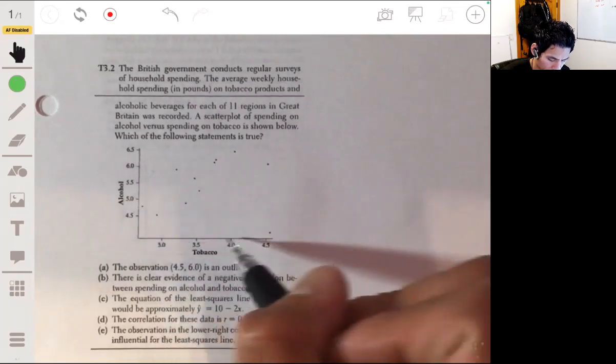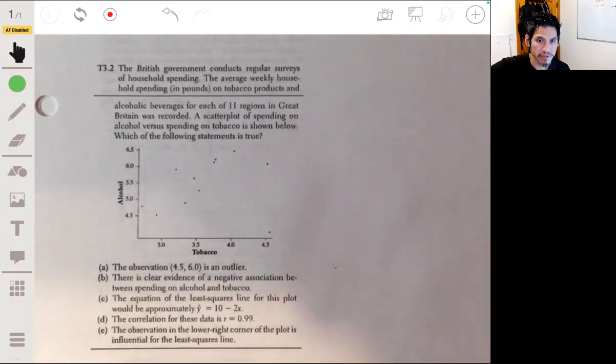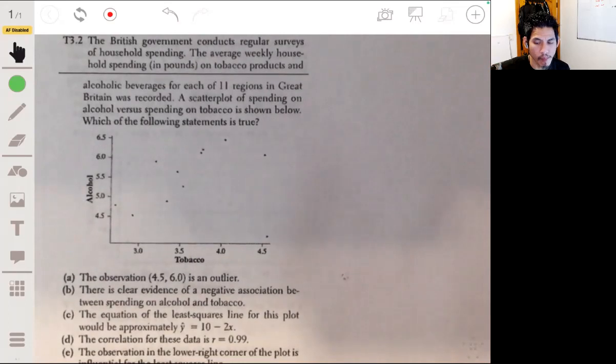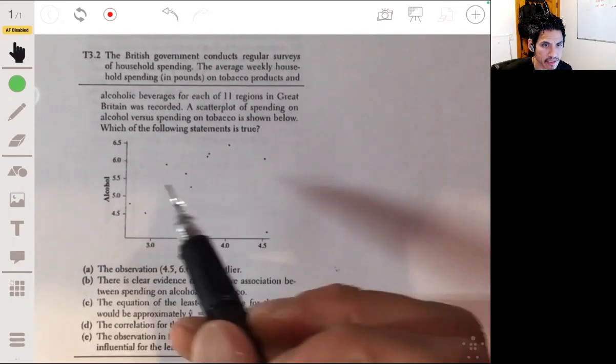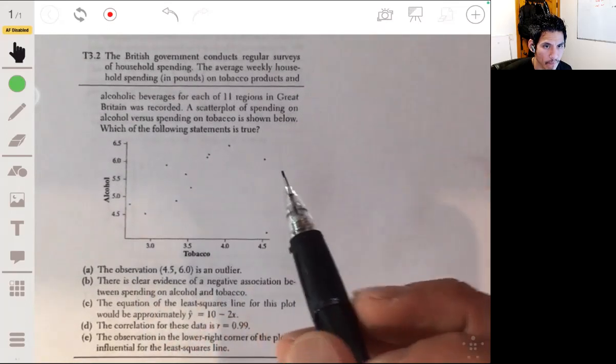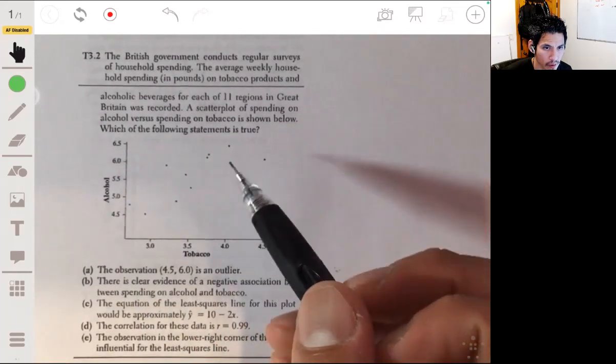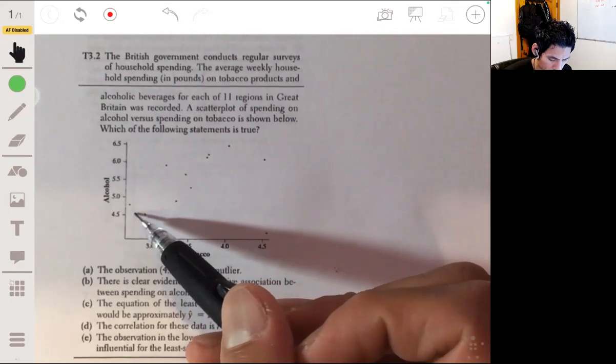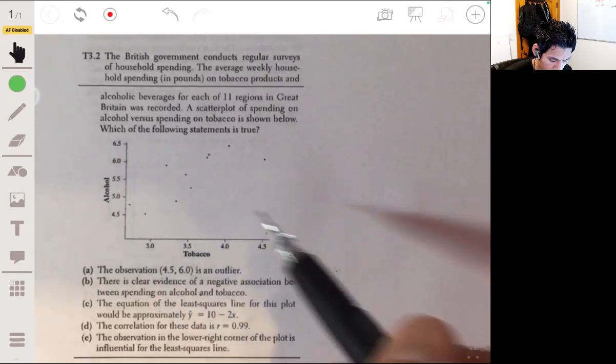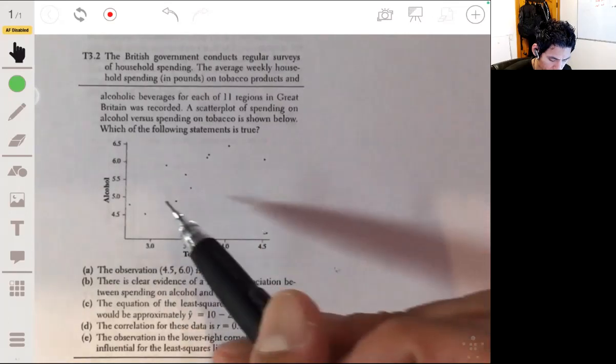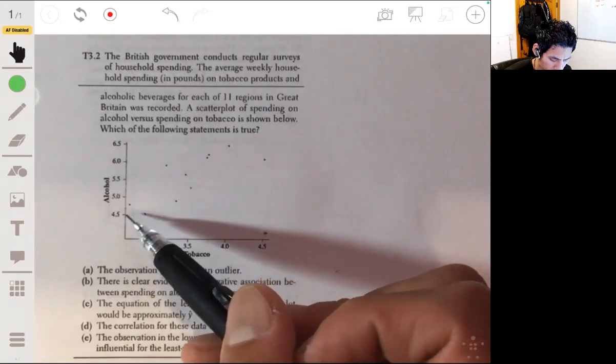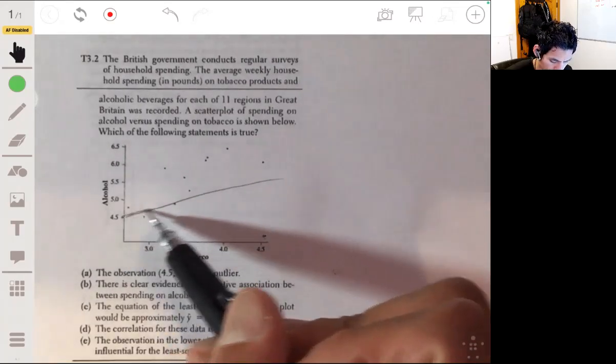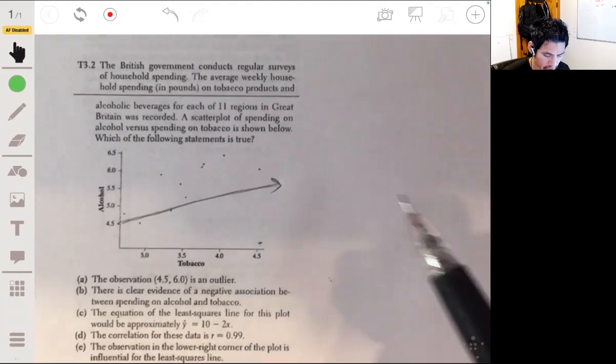Okay, here we have tobacco on the x-axis and alcohol on the y-axis. So if we were to draw an approximate least squares regression line—see how we have a point over here? If that wasn't here, maybe our line would be more steep up, but I'm just going to guess it's something like this. I don't know, but that's just kind of my guess.